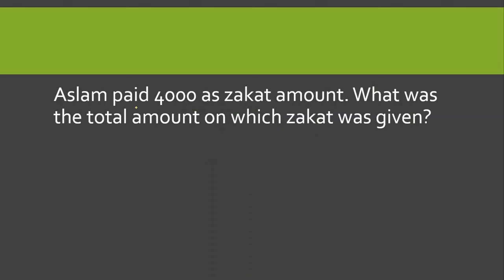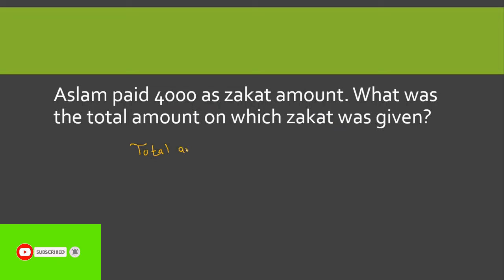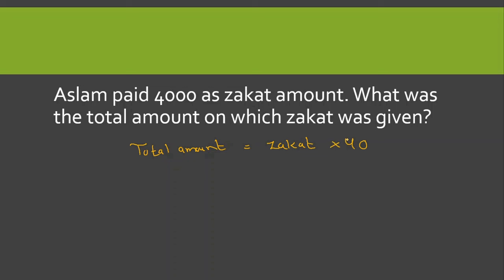اگلا سوال: Aslam paid 4000 as Zakat amount — what is the total amount on which Zakat was given? آپ کو Zakat کی رقم دی گئی ہے اور آپ سے total amount کا پوچھا گیا۔ Total amount = Zakat amount × 40۔ تو 4000 کو 40 سے multiply کریں — 4×40=160 اور چار zeros — تو answer ہے ایک لاکھ ساٹھ ہزار روپیز۔